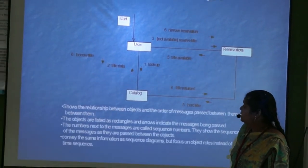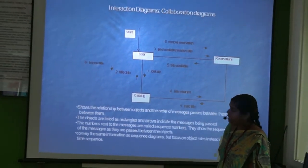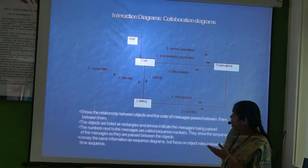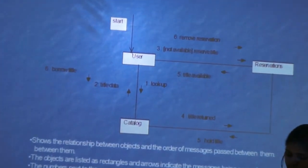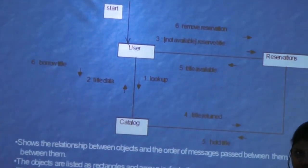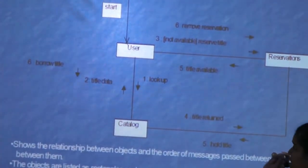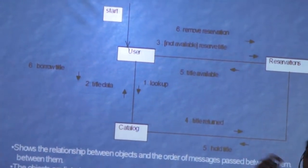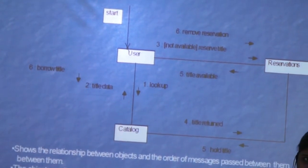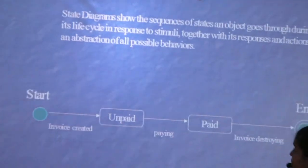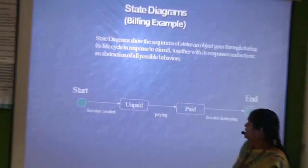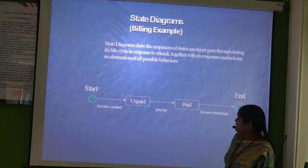This is a collaboration diagram. The rectangles represent the software objects. Arrows as well as sequence numbers are used to show the flow and direction of messages.